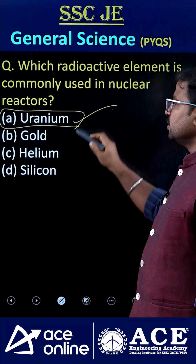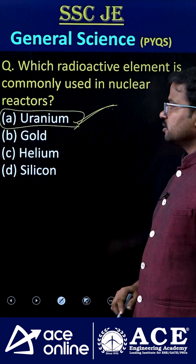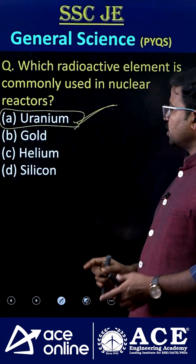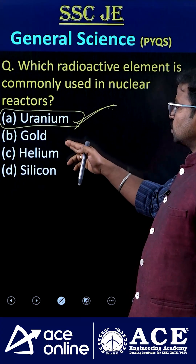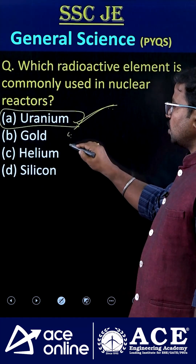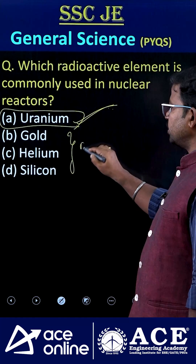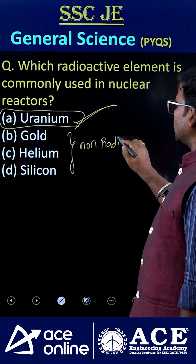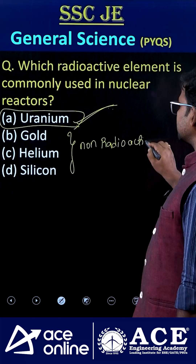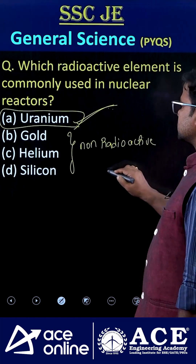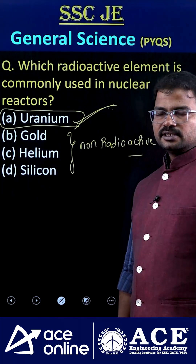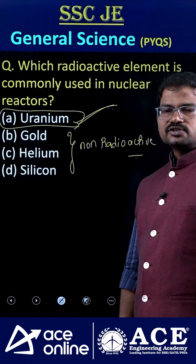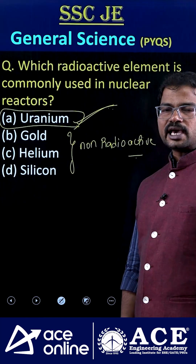Uranium is a radioactive element and using it we can make fuel rods. Gold, helium, and silicon are non-radioactive elements.